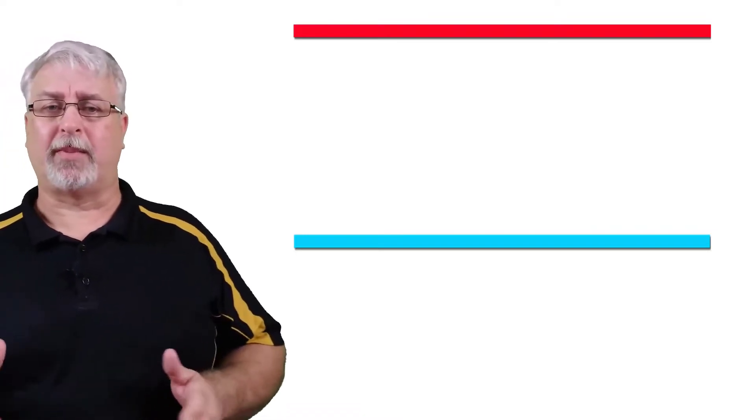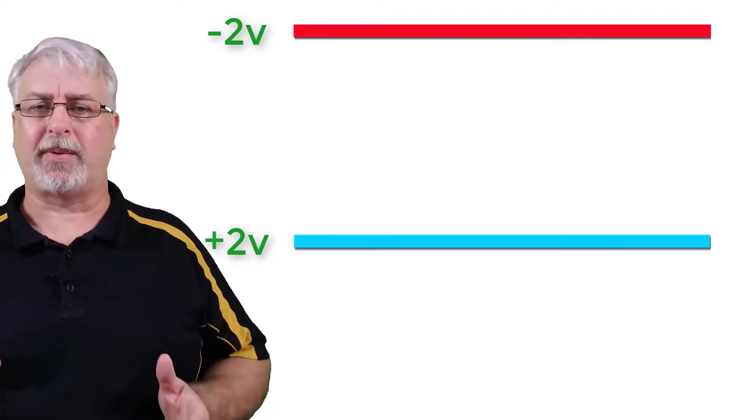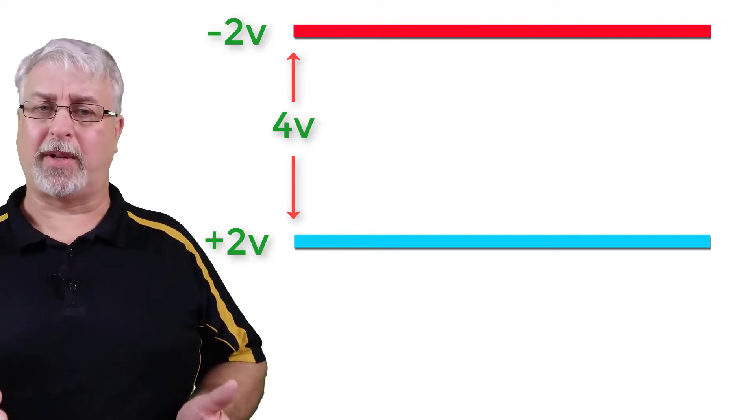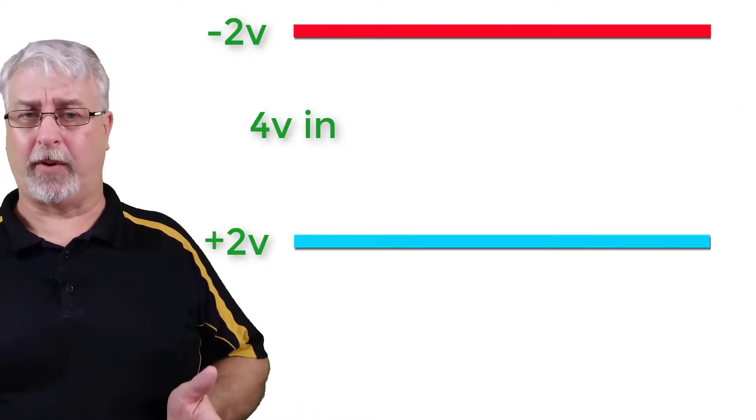As an example, let's assume the top line here has minus 2 volts, and the bottom line is plus 2 volts, which makes the potential difference 4 volts. For data transmission, we want the input voltage to be equal to the output voltage, so if we put 4 volts in, we want to see 4 volts out.